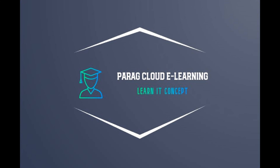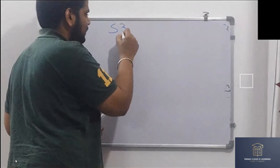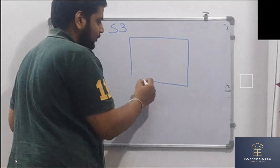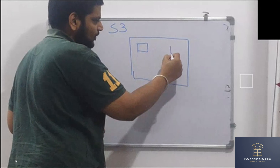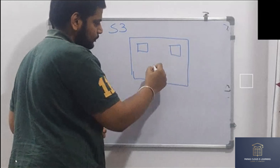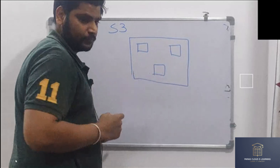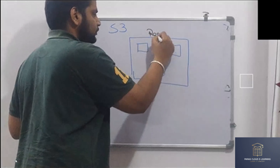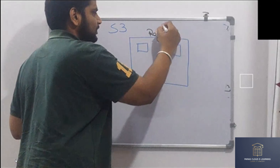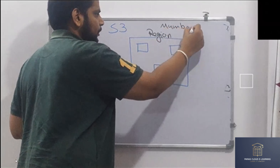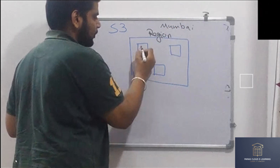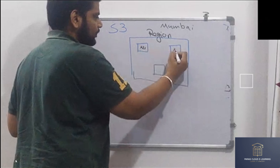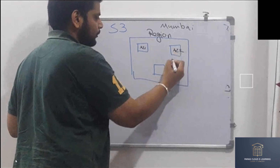What is consistency and how is S3 working on the consistency part? In S3, the data is replicated within the region across the availability zones. This is your region — let's call it the Mumbai region. So this is availability zone one, this is availability zone two, and this is three.